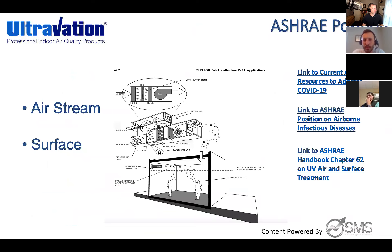ASHRAE's position on this is something I really want to drive home. I'm going to send you links after the presentation, and I'd recommend you read them and even send them out to your contractors. ASHRAE's position on killing bacteria and viruses is to use UVGI technology, which is only found in UVC lamps. They recommend UVC lamps that produce UVGI technology in the airstream and on surfaces to kill bacteria and viruses. That's what we're really pushing, because that's what ASHRAE's position is.